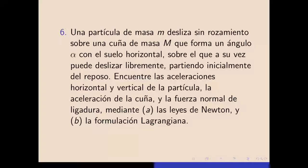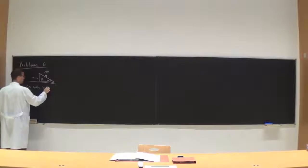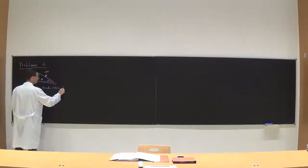El problema 6 dice que una partícula de masa m desliza sin rozamiento sobre una cuña que tiene masa M mayúscula. Es una partícula que desliza, no rueda. En el próximo tema hablaremos de la rodadura. Desliza libremente partiendo inicialmente del reposo. Hay que encontrar las aceleraciones horizontal y vertical, la aceleración de la cuña y la fuerza normal de ligadura. Hay que utilizar primero la formulación newtoniana y después la formulación lagrangiana. El ángulo de apertura de la cuña es alfa y la cuña se puede mover. Es una variación del problema del plano inclinado.